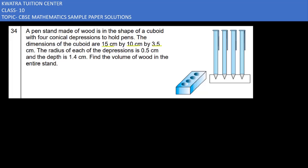Let's now start with question number 34. Here it says we have a pen stand made up of wood in the shape of a cuboid with four conical depressions to hold pens. Four conical depressions here, we have to stand the pen.